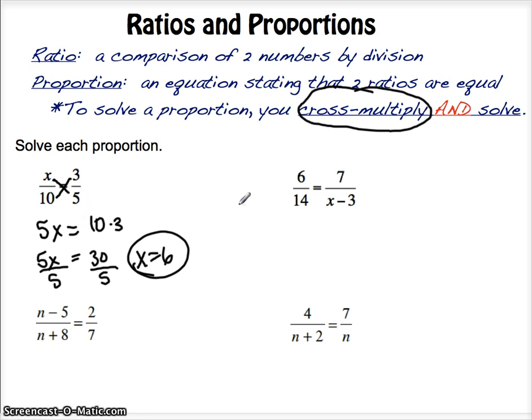Okay? Over on the right, we are going to have some proportions that have binomials in it. Or full terms, such as x minus 3. All right, when we cross multiply, it is 6 times that whole thing, x minus 3, equals 14 times 7.